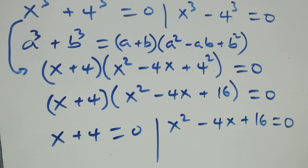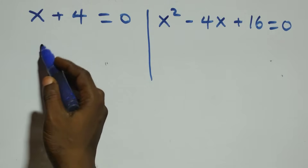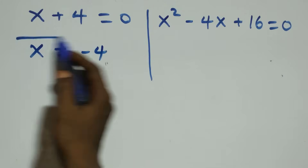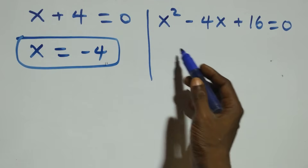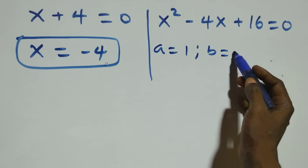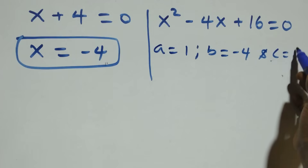Watch this video to the end, subscribe, give a thumbs up, and put your comments. Solving the first case, x plus 4 equals to 0 gives us x equals to minus 4, which is a real solution. For the quadratic x squared minus 4x plus 16 equals to 0, we have a equals to 1, b equals to minus 4, and c equals to 16.